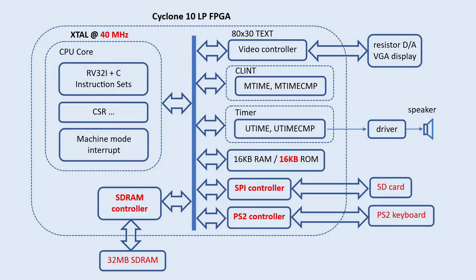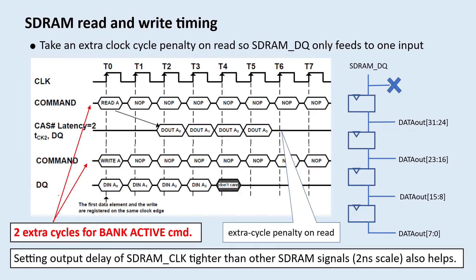This is where I left off from my last project update. I added a few components to my system so it could boot from SD card onto SDRAM. The SDRAM I added is a 32 megabyte by 8 SDRAM. The capacity is much more than what I had before, which was only 16 kilobytes.